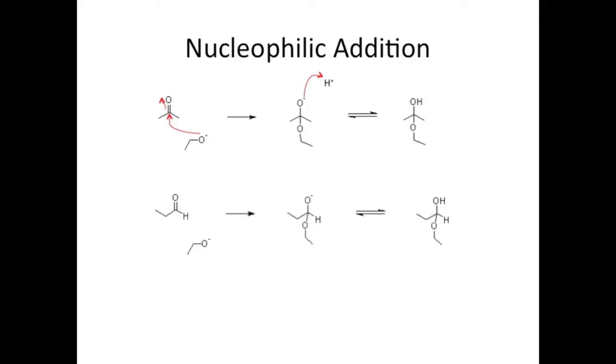Again, the nucleophile attacks the carbonyl carbon to form a tetrahedral intermediate, which is then protonated to form an alcohol. Note that aldehydes will always form primary alcohols while ketones will form secondary. That's really the only difference between the reactions.